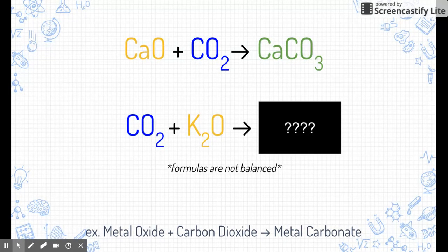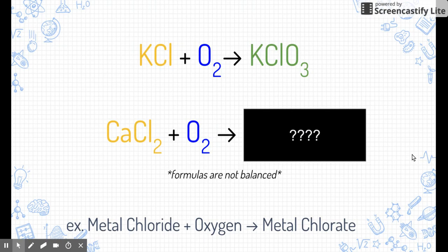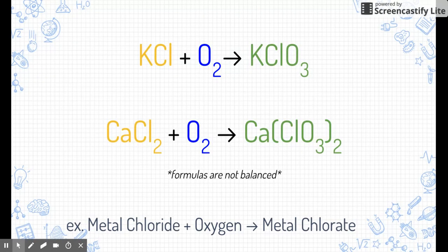Here's our third example: metal oxide plus carbon dioxide gives us a metal carbonate. So calcium oxide plus carbon dioxide gives us calcium carbonate. Pause the video and see if you can figure out the next one — potassium oxide plus carbon dioxide gives us potassium carbonate. Finally, the last type of composition reaction: metal chloride plus oxygen gives us a metal chlorate. Potassium chloride plus oxygen gives us potassium chlorate. Calcium chloride plus oxygen gives us calcium chlorate.